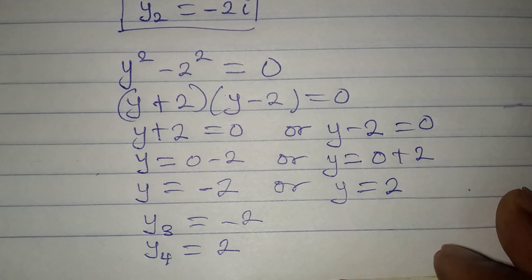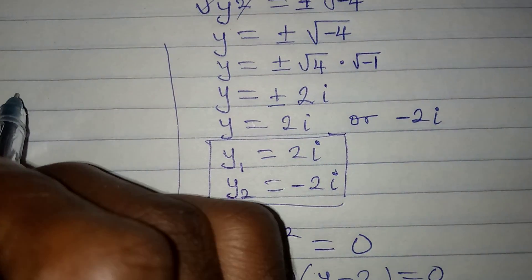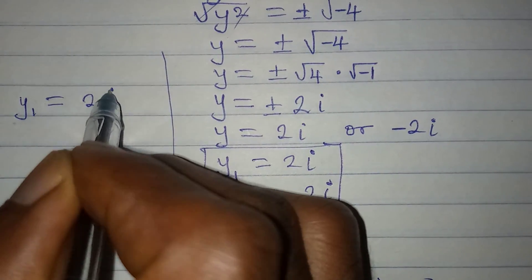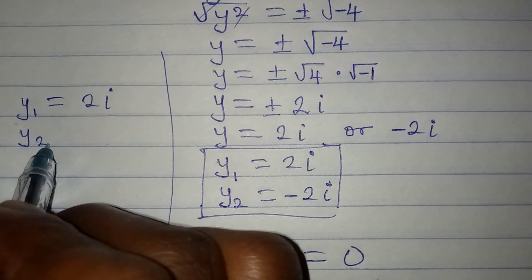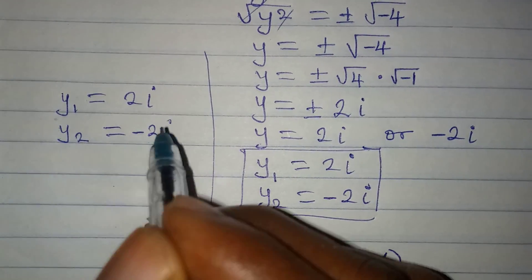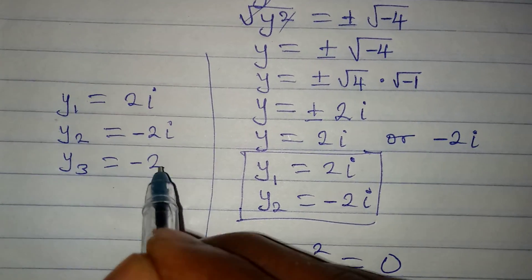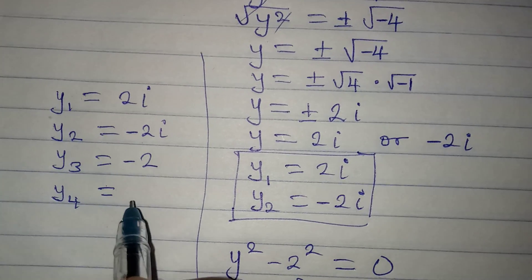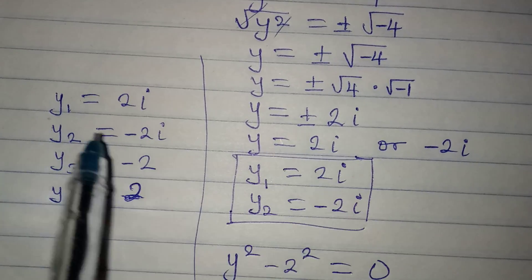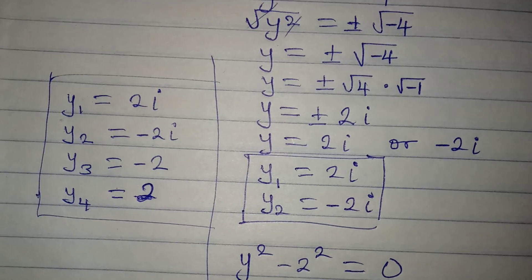Now I want to bring the four solutions together. We have y1 equal to positive 2i, y2 equal to negative 2i, y3 equal to negative 2, and y4 equal to positive 2. These are the four values of y from the equation. Thank you for watching.